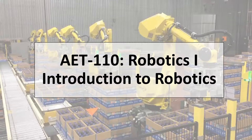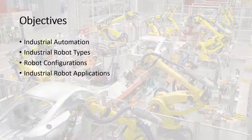This is our first lecture in our robotics course. In this lecture we're going to focus on describing industrial automation, the different industrial robot types, robot configurations that we find in a manufacturing environment, and typical industrial robot applications.